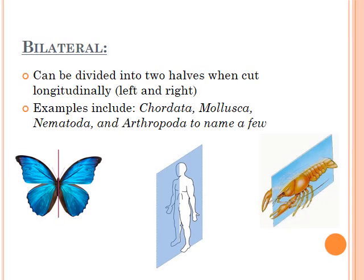The first type of symmetry is known as bilateral. Bilateral meaning it can be cut into two equal halves or segments. Bilateral organisms can be divided into two halves when cut longitudinally — so we're talking left and right, cut into a left and right half.